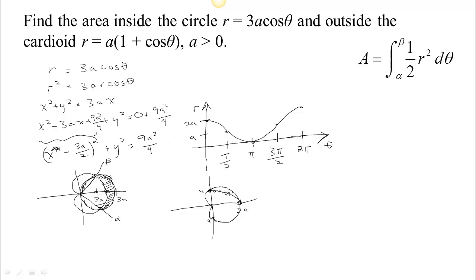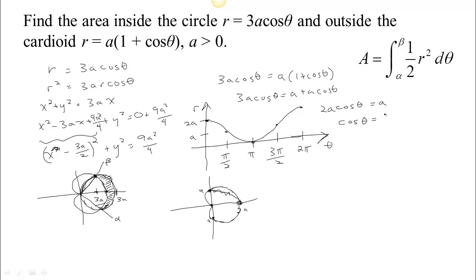The key is to find the angles where both curves have the same value of r. So when is 3a cosine theta — the value of r on the circle — equal to a times (1 plus cosine theta)? Distributing gives 3a cosine theta equals a plus a cosine theta. Taking a cosine theta from both sides leaves 2a cosine theta equals a, so cosine theta equals 1/2. There are two values for this angle: theta equals negative pi thirds or positive pi thirds.